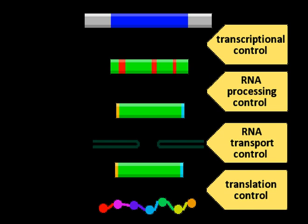General transcription factors position RNA polymerase at the start of a protein coding sequence and then release the polymerase to transcribe the mRNA.